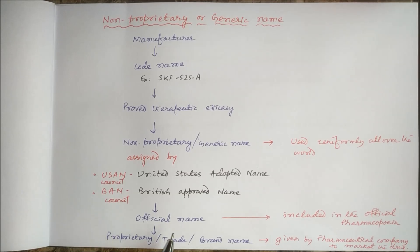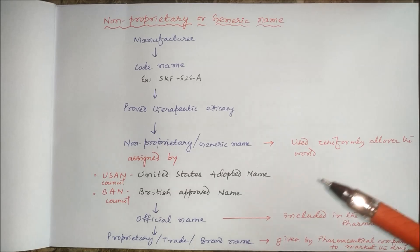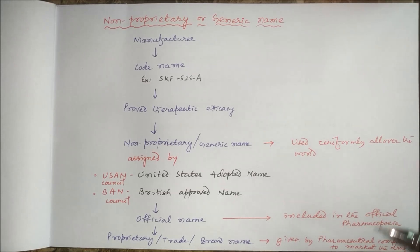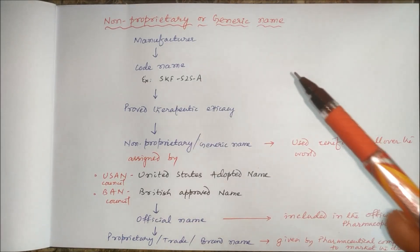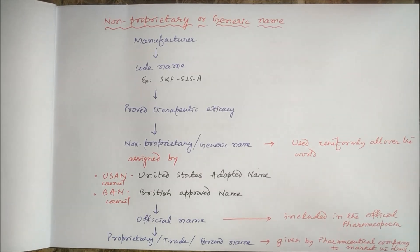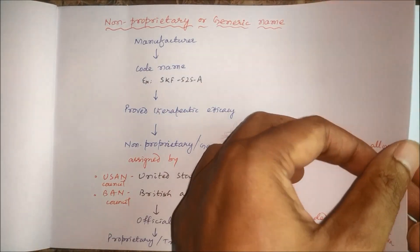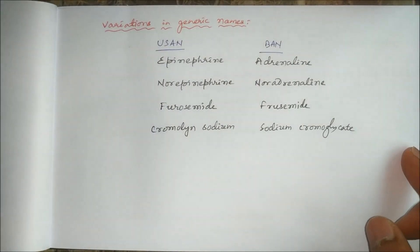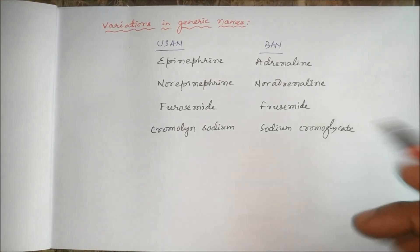Finally, the official name is given and that name is included in the official pharmacopoeia. Then the pharmaceutical company which markets this non-proprietary or generic medicine gives a brand name, trade name, or proprietary name to that molecule. Let us see what are the variations in the generic names given by USAN and BAN.